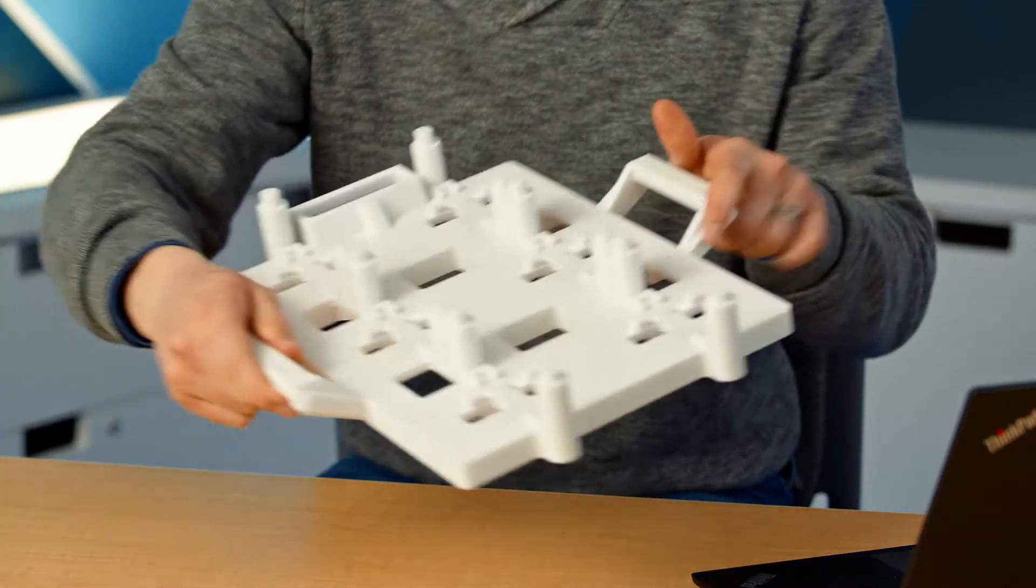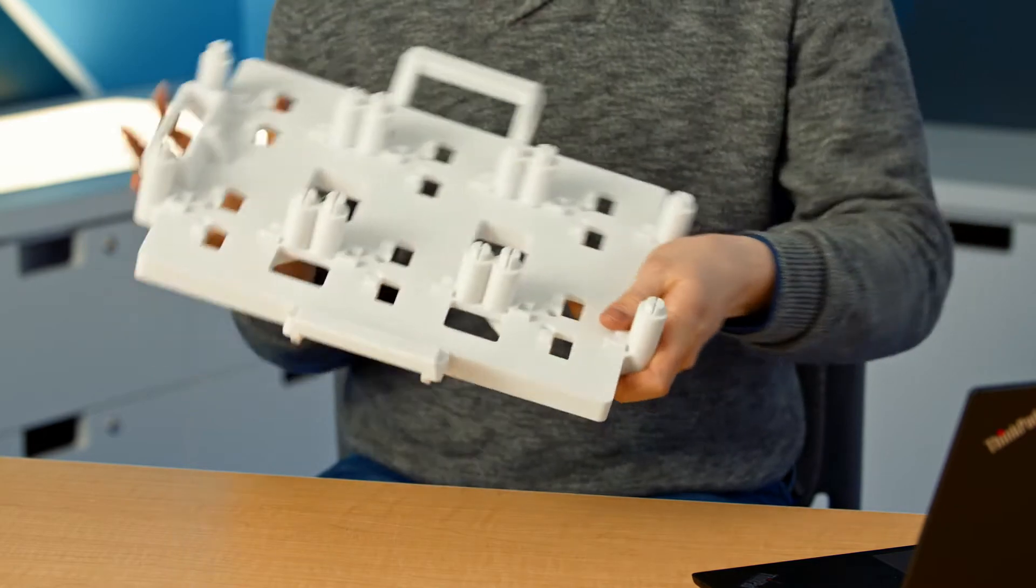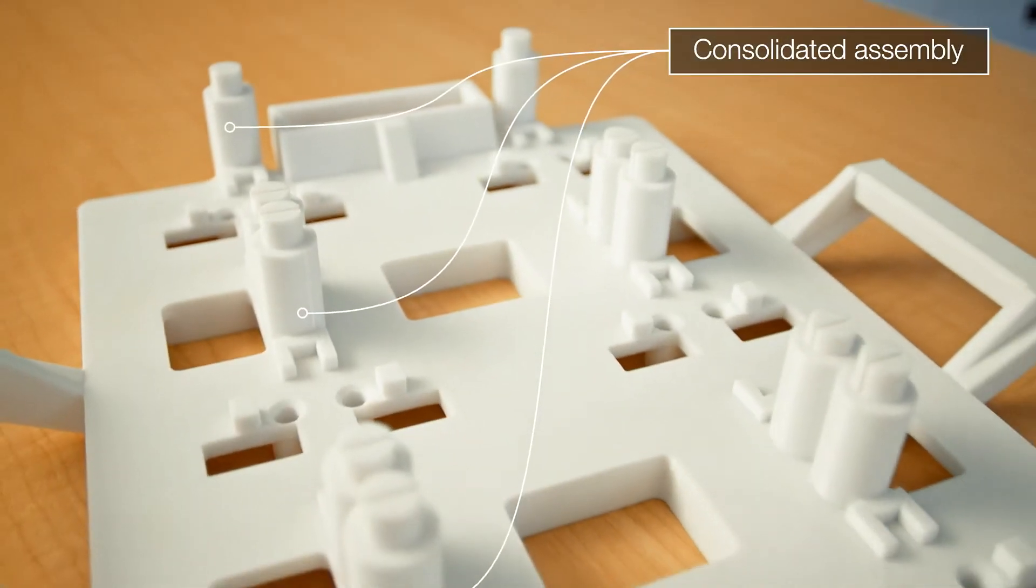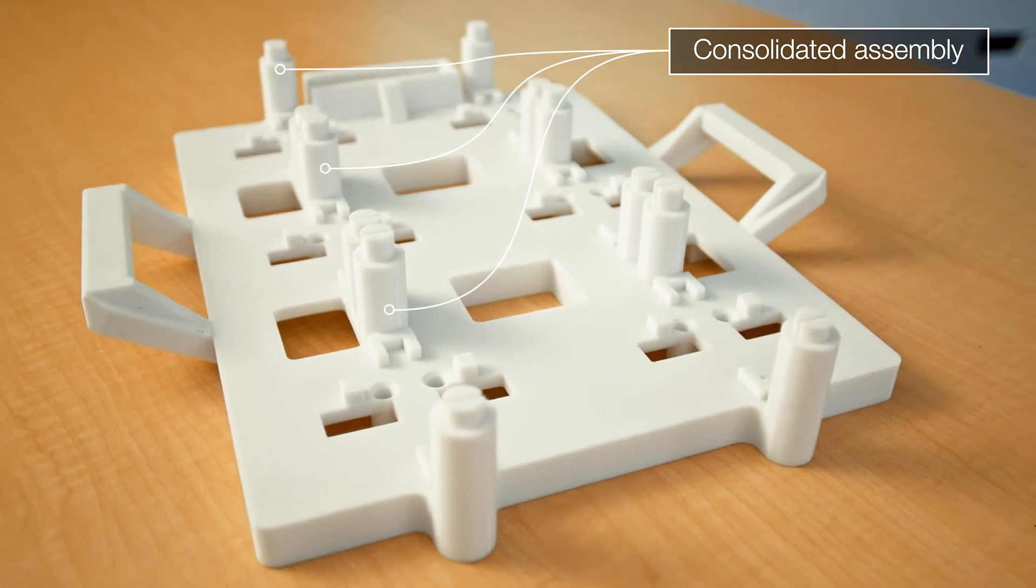So for example, with this inspection fixture here, there are several traditionally manufactured pieces that all have to be manually assembled after the fact. With 3D printing, we can digitally consolidate the assembly so that there aren't any unknowns when we create the part.